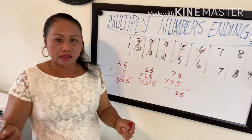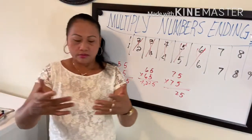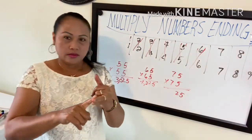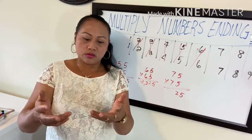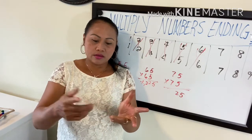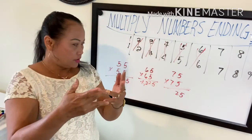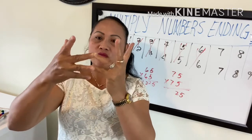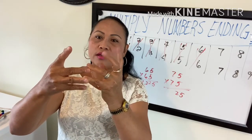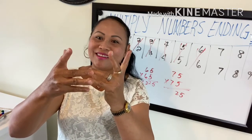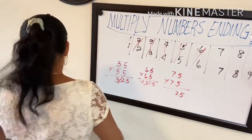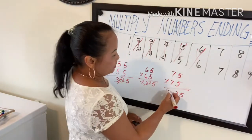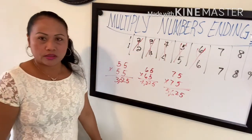If you have a hard time remembering multiplication, you can use your hands. For seven times eight: count to seven and to eight on your fingers. The lower fingers give you the tens digit, and the remaining fingers multiply for the units. Seven times eight is 56, so 75 times 75 equals 5625.